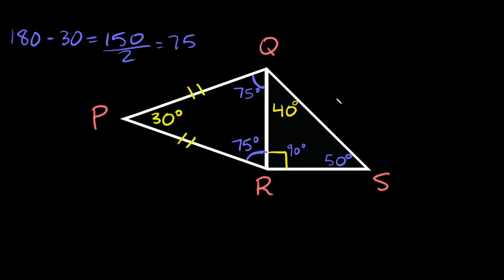Now the next thing we have to do is just find the shortest side on each triangle. So if we look at the isosceles triangle again, the shortest side always comes from the smallest angle. So as you can see the smallest angle is this one right here at 30 degrees. So right here at angle P, and this angle opens up to this side over here. So the shortest side of this isosceles triangle is this segment right here from Q to R.